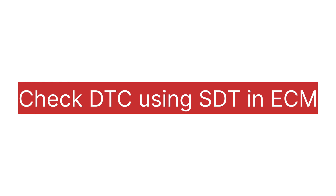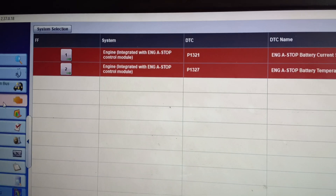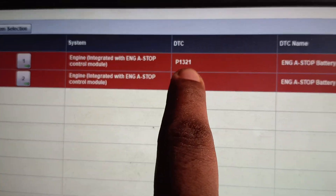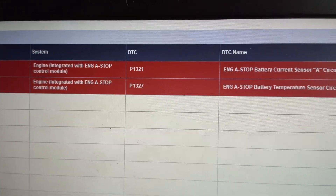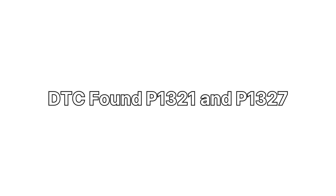Check DTC and fill the current DTC detected by ECM. Check DTC using SDT. DTC P1321 and P1327 — both DTCs are current. Write down the DTCs P1321 and P1327.